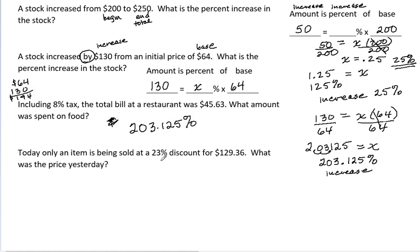Today only, an item is being sold at a 23% discount for $129.36. What was the price yesterday? We've got a 23%, but that's the discount amount. The base would be the yesterday price. That's our base. That's what we don't know.